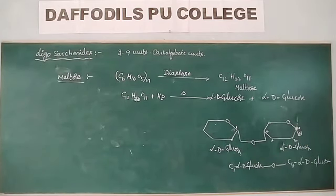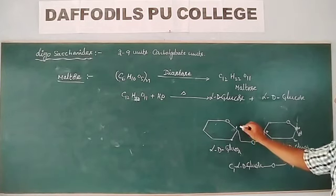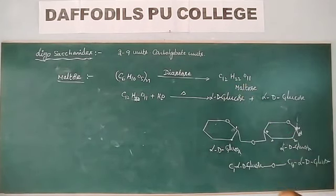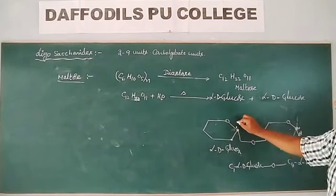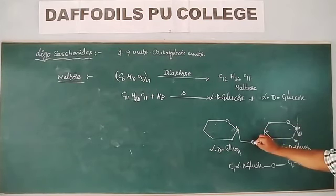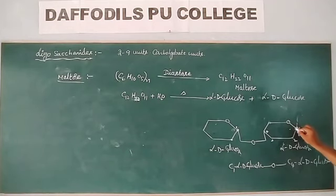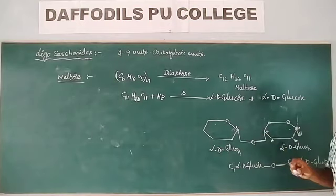So the first carbon of alpha-D glucose makes a bond with the fourth carbon of another alpha-D glucose. In maltose, one of the first carbon CHO units is involved in bond formation, but in the second unit the CHO group is free. Hence maltose is a reducing sugar.